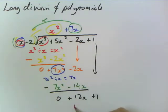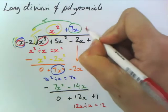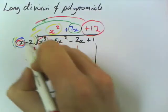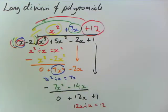So we're going to go 12x divided by x is 12, so we write that up the top. And then we multiply that by our brackets again. And we write that down here.